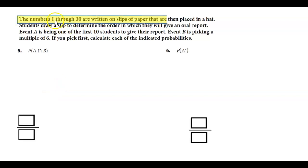So it says numbers 1 through 30 are written on a piece of paper and are placed in a hat. Students draw a slip to determine the order in which they will give an oral report. So let's say set A is one of the first ten students to give a report and set B is picking a multiple of six.